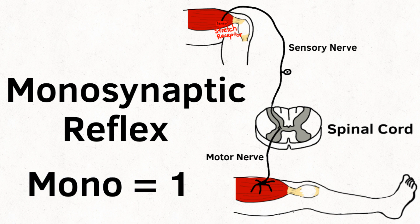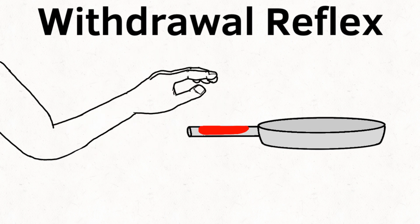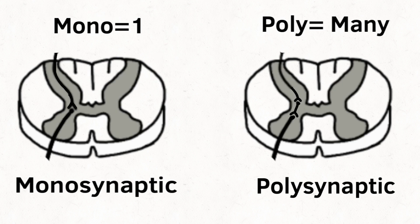Notice how there was only one synapse in this monosynaptic reflex. Now, imagine if you touched something hot or stepped on something sharp. In order to protect your body, the withdrawal reflex should happen. The withdrawal reflex is polysynaptic — poly meaning many. More than one synapse will occur with a polysynaptic reflex, because they have an interneuron or multiple interneurons.